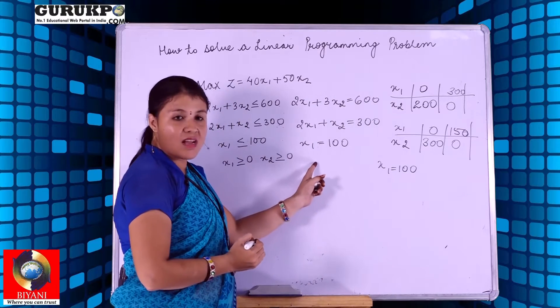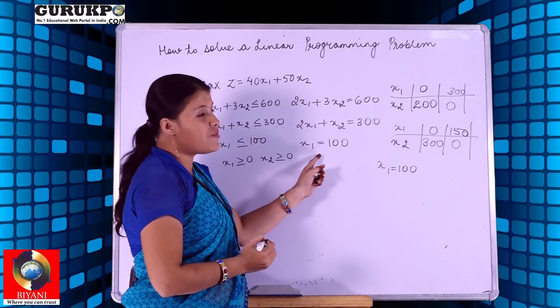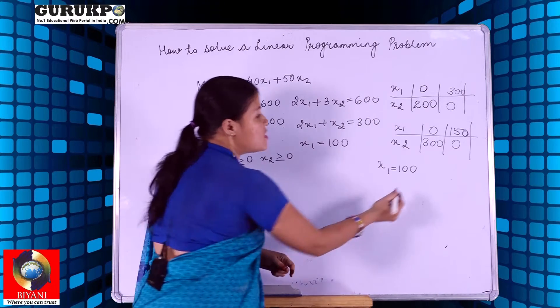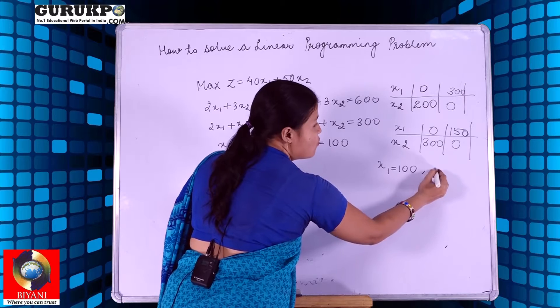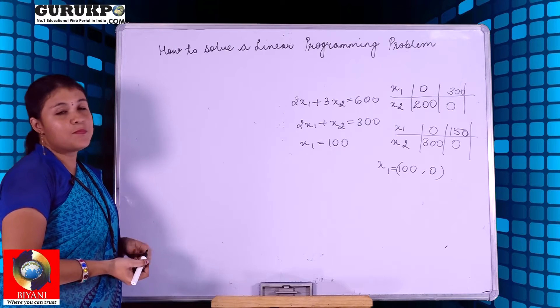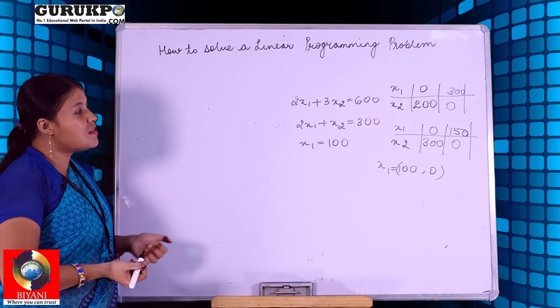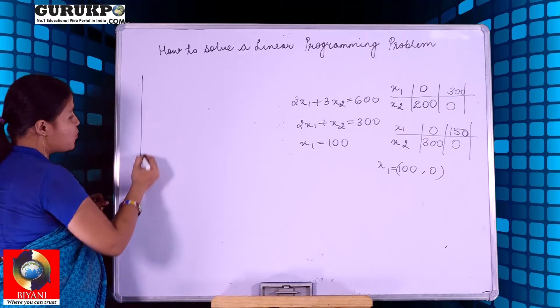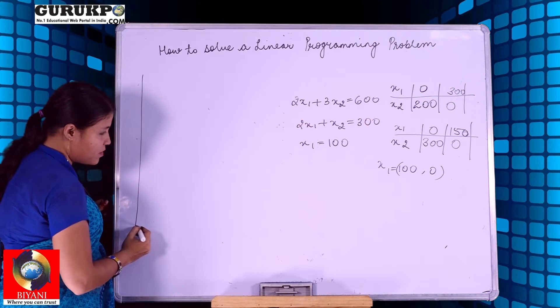In the third equation, the value of x2 is not given, so we assume it as 0. After calculating all the intercept points, we are now going to plot these points on graph paper.